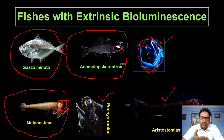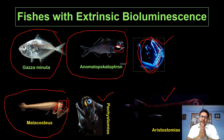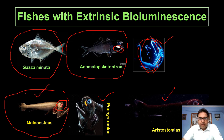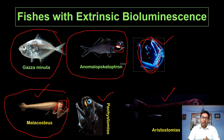Why do some fishes produce red light and others blue? One function is to attract or lure prey, and another is intraspecific communication. When red light is produced, it has been suggested it is for intraspecific communication within the species. Malacosteus niger uses red luminescence to see without being seen by other animals such as predators.